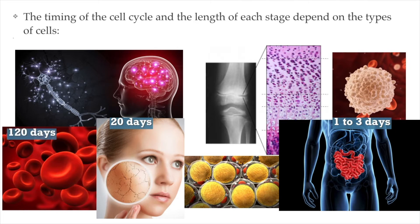Our blood is replaced every 120 days. So if you've ever donated blood or received a blood transfusion, you might wonder whether you'll always have someone else's blood in your body — no, that's not the case. Our blood cells are not there forever; they get replaced every three months or so. Our immune cells, depending on the type, take between 10 hours to years to undergo cell division. Some immune cells that carry our immunity stay in our body for years, while some white blood cells might only last a few hours.